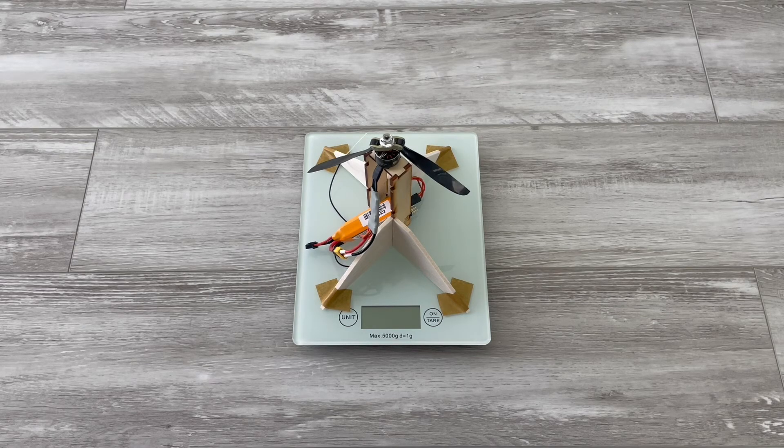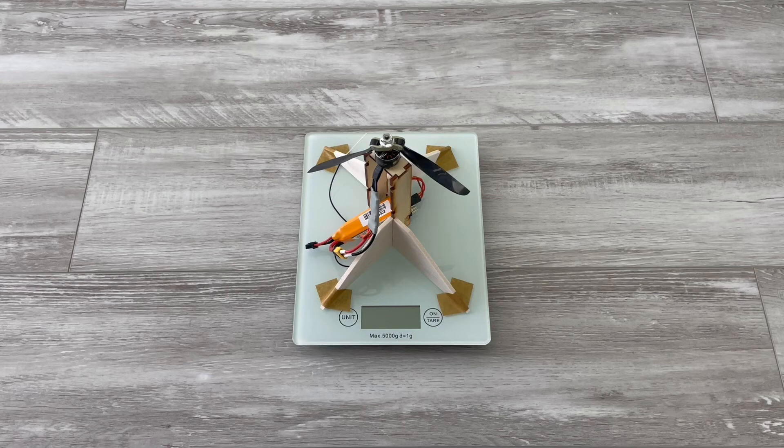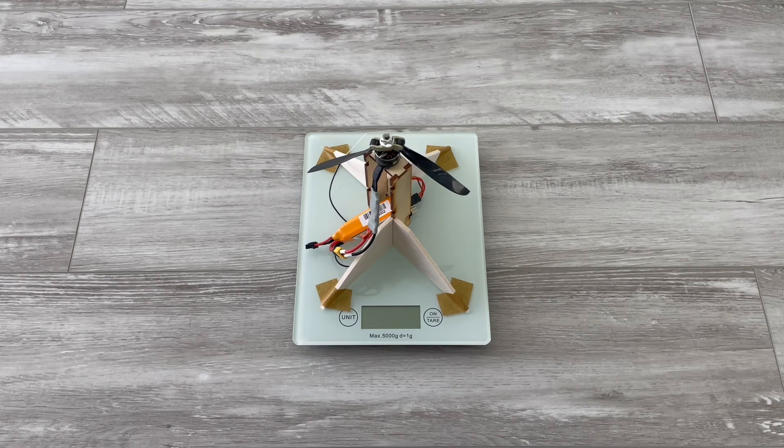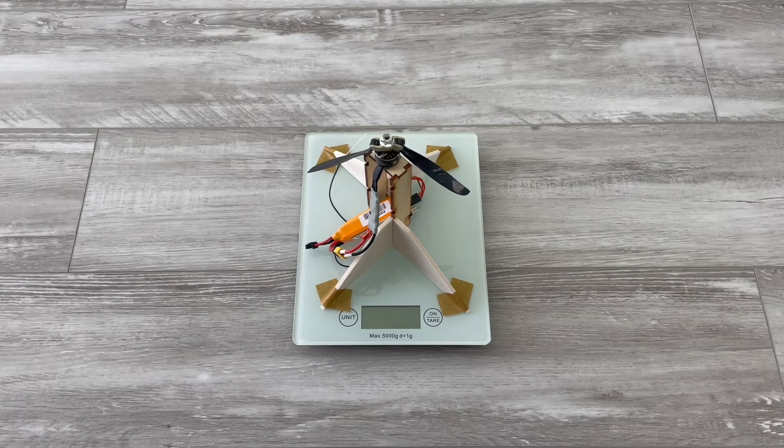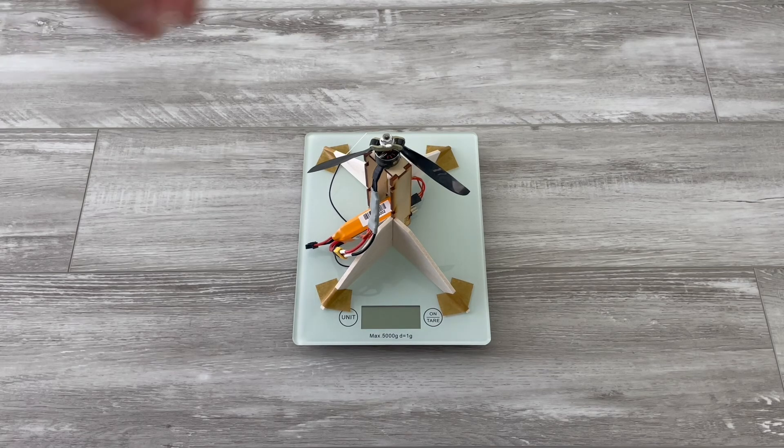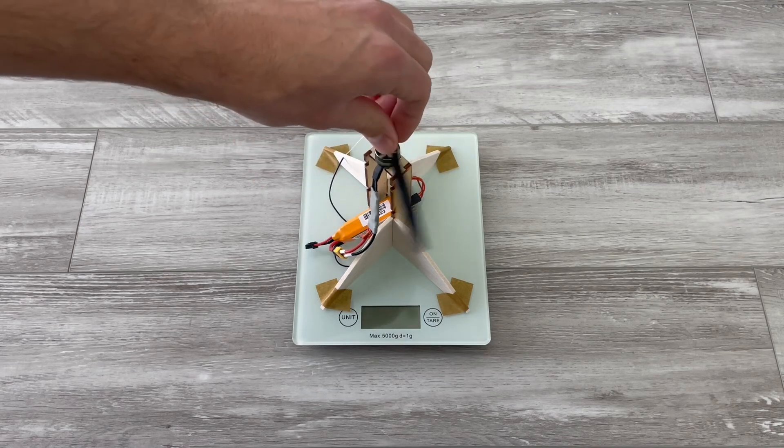The second one will be slightly cheaper because of the cam blades, which are more than twice less the price of these 7x4 carbon ones.